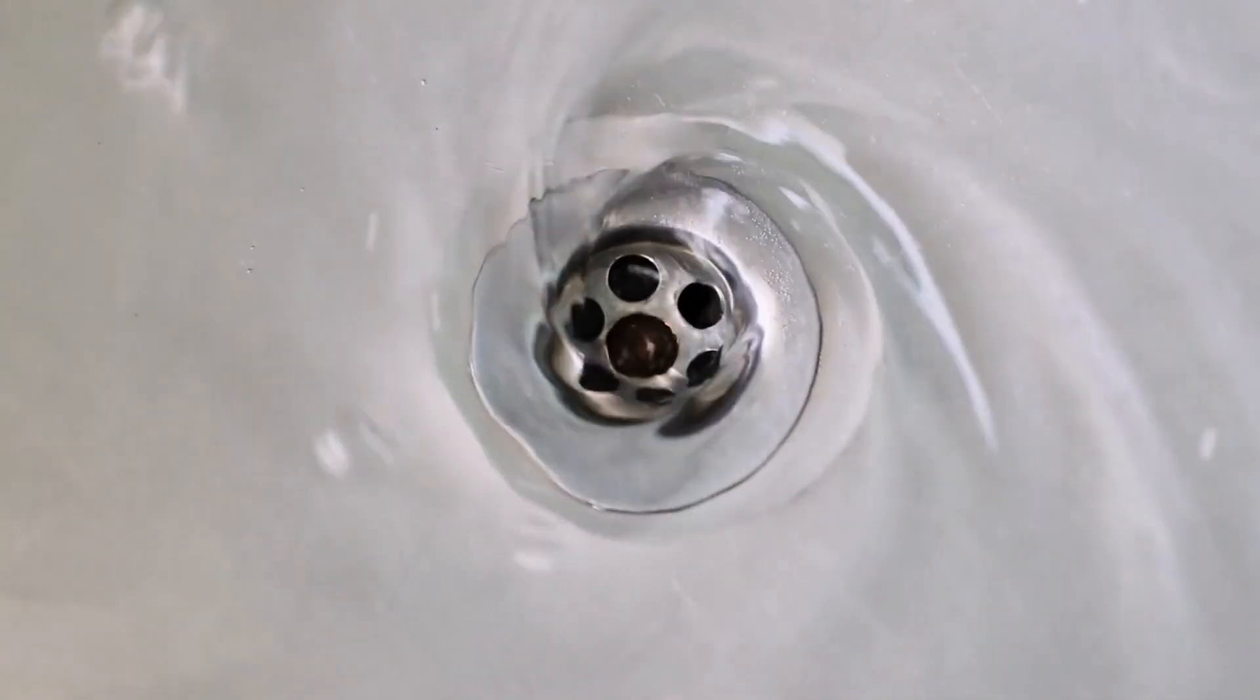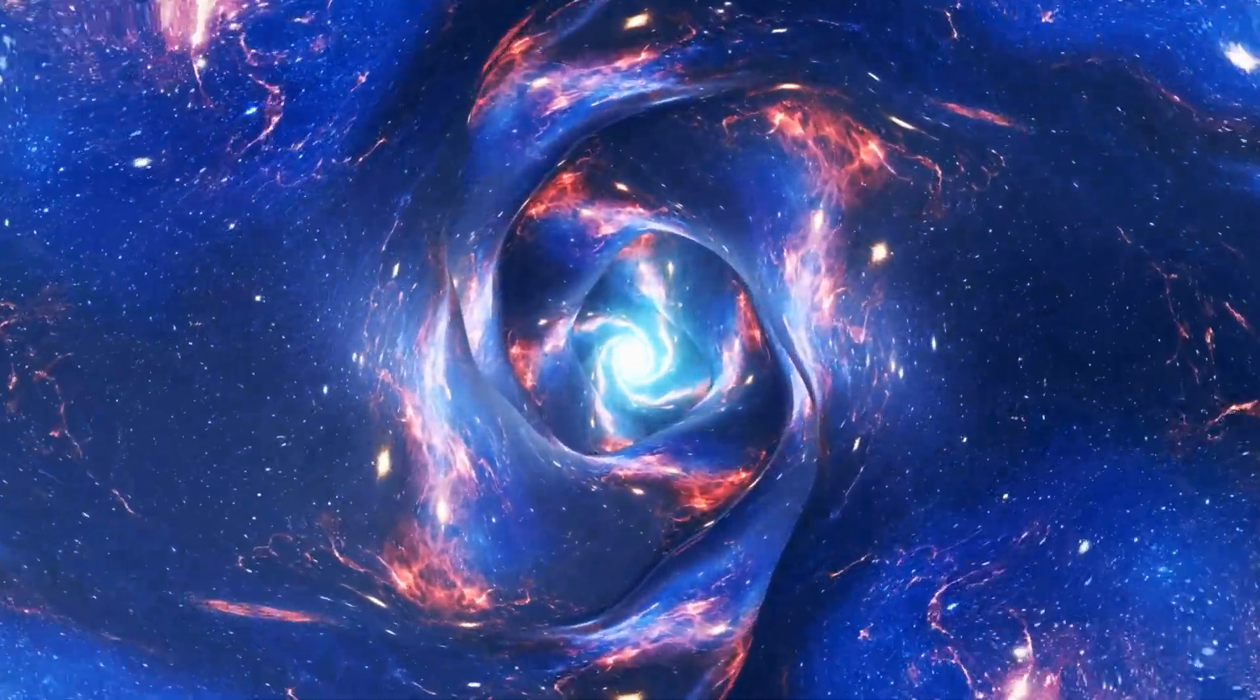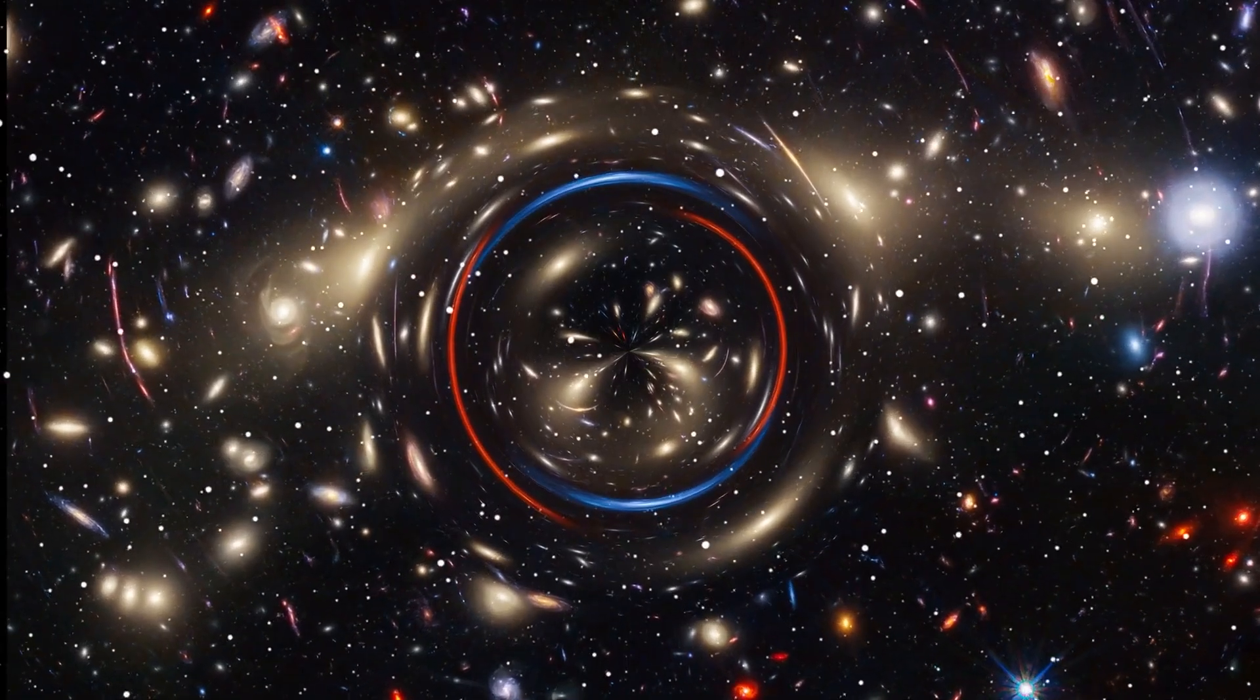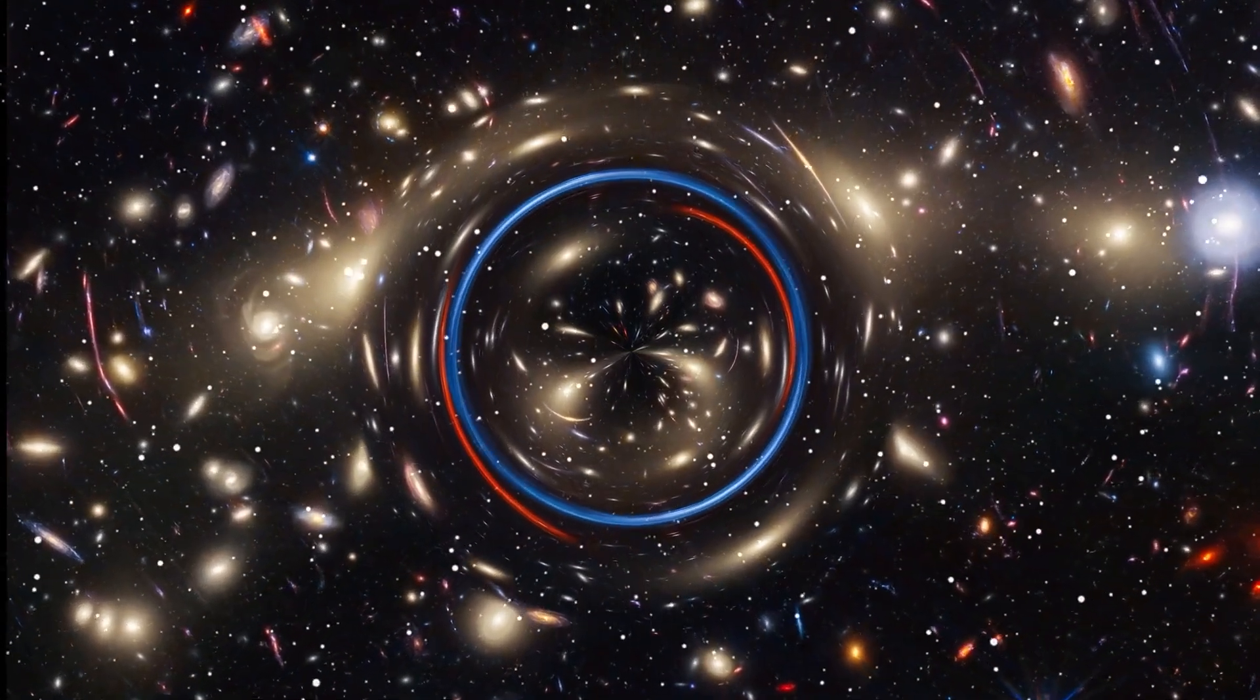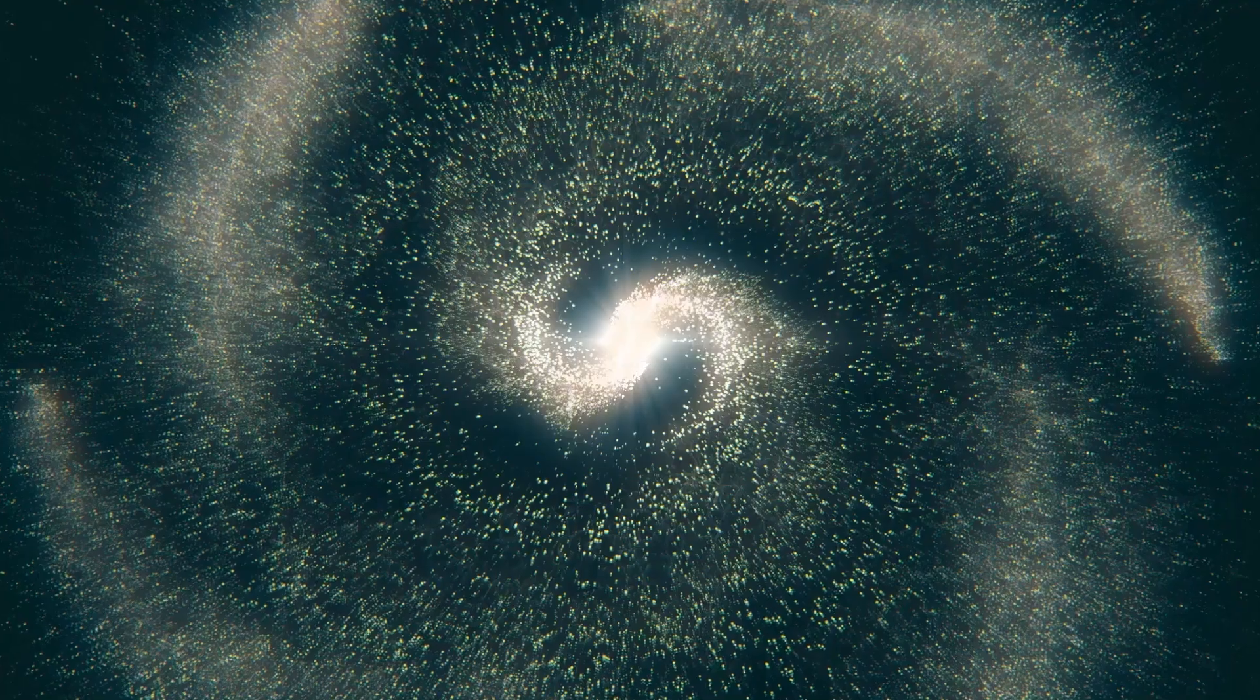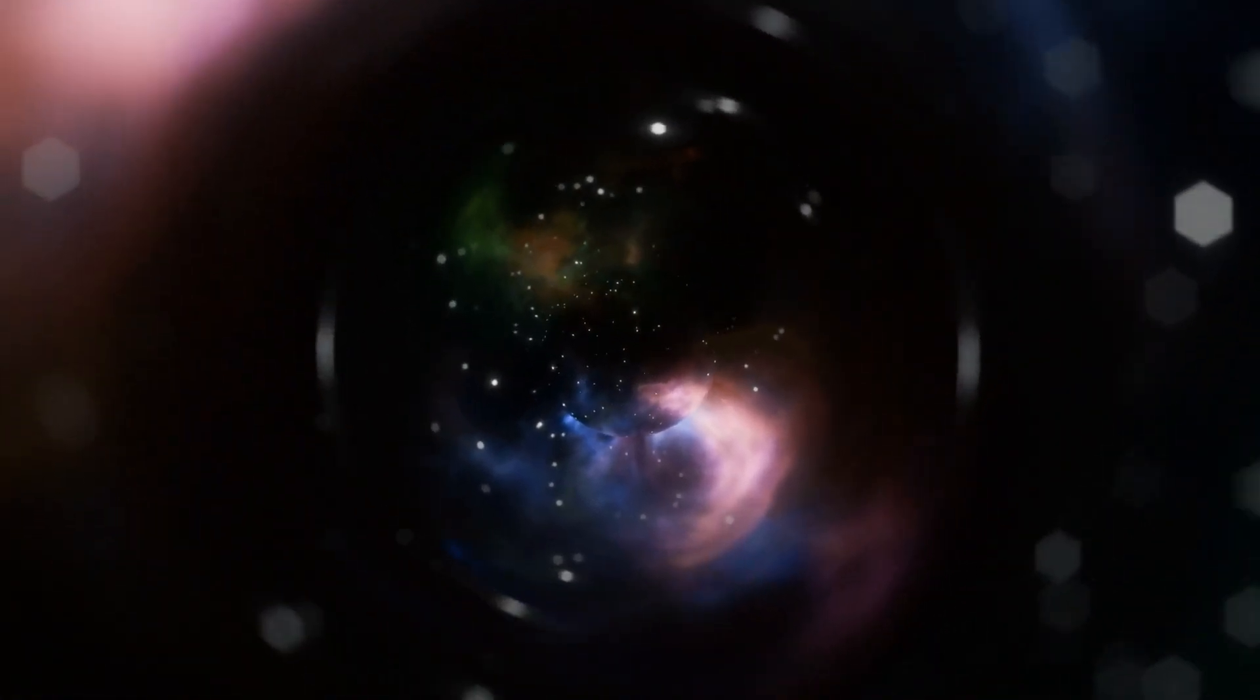Think about it. When water spins as it goes down a drain, it creates a vortex. If space-time itself is born from a similar spinning collapse, that spin could be inherited by everything that forms inside it, including galaxies. That would explain the strange imbalance in galaxy rotation. It's not just a fluke. It's a cosmic fingerprint, an imprint of the black hole that birthed our universe.